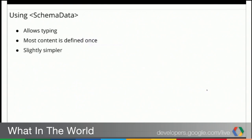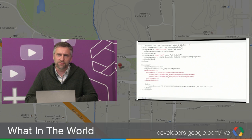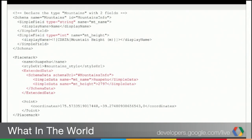That's using something called schema data. Schema data inside KML allows you to type your content, and it's actually slightly simpler than using extended data. You still define your balloon style, but then at the top you create something called a schema. You can see we've defined something called a mountain name of type string and a height of type int. There are about eight different types you can store — string, int, date, floats, real numbers, and all sorts of things. We'll include the URL to the documentation so you can read about the different types that are supported.